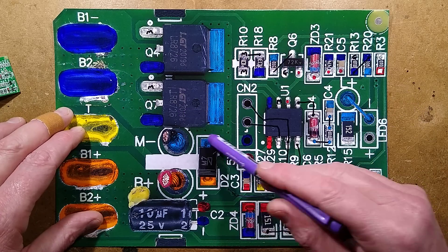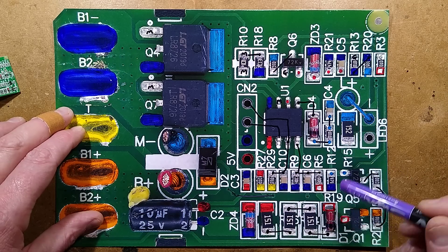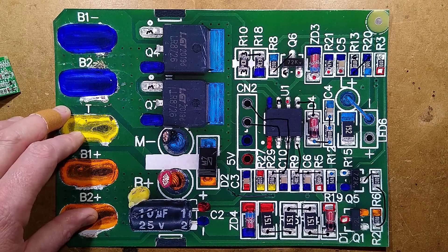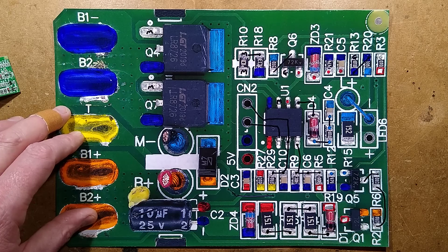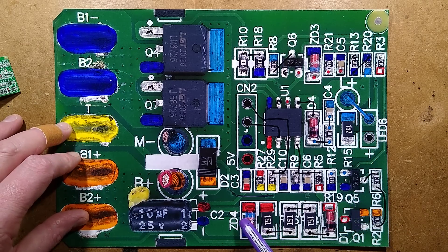There are two MOSFETs switching current to the load. There's a diode across that load, and that's the two connections going out here. There's a processor, mystery processor, and then, well, let's just cut straight to the schematic.